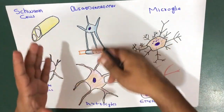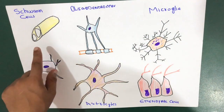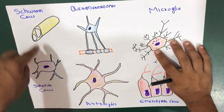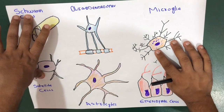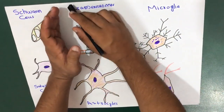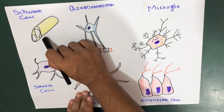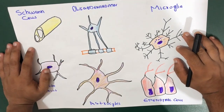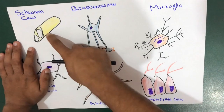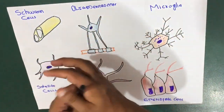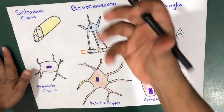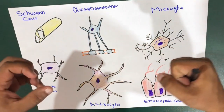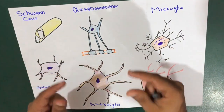Starting with Schwann cells — remember that Schwann cells and satellite cells belong to the peripheral nervous system. Schwann cells myelinate axons in the peripheral nervous system and protect them. Between these Schwann cells, we have the node of Ranvier, which we discussed in detail in the previous video about the structure of neurons.